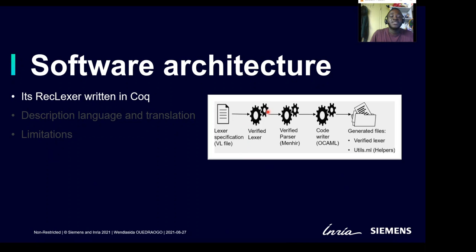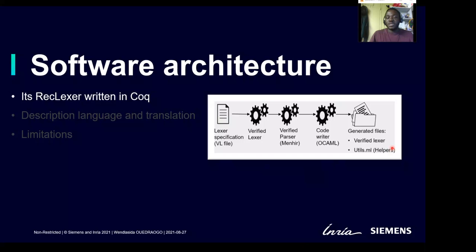The lexer in our system is directly a COCLEX written in Coq. The parser is written and generated by Menhir with Coq support, which helps generate verified parsers. The code writer is directly written in OCaml and is not verified. When we give a specification file to our generator, it can generate a Coq file that builds the lexer corresponding to our specification, and also gives files that help with extraction and adapting our generated lexer to work like OCaml lexers.